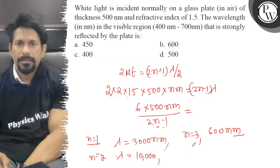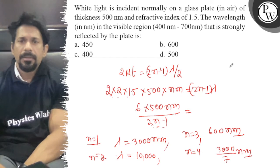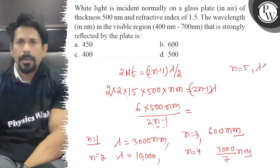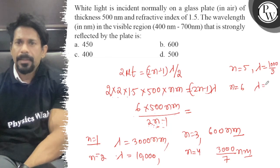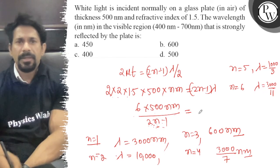Testing more values: 3000 upon 7, but there is no perfect number like this. For n equals 5, we get 3000 by 9 which equals 1000 upon 3. For n equals 6, we get 3000 by 11, so this is not the right number either.